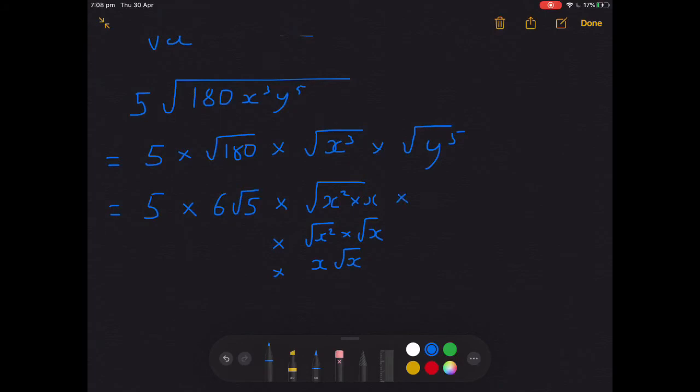And it's going to be the similar sort of deal for y to the 5th. y to the 5th is y to the 4th times y. And what you're going to find is the square root of y to the 4th is y squared. And that follows from index laws that you might have learned previously as well.